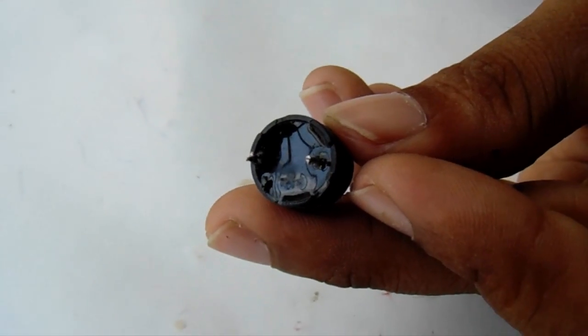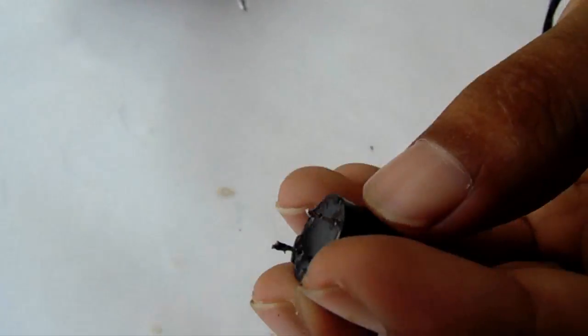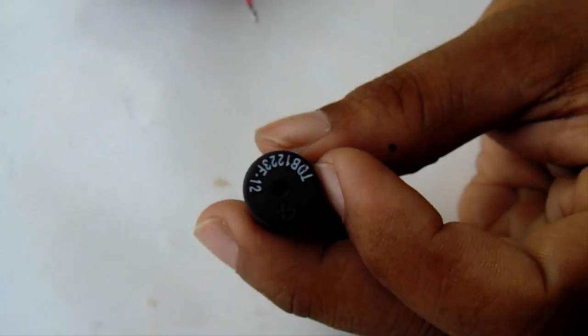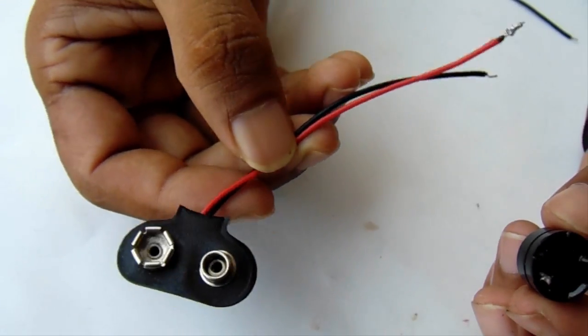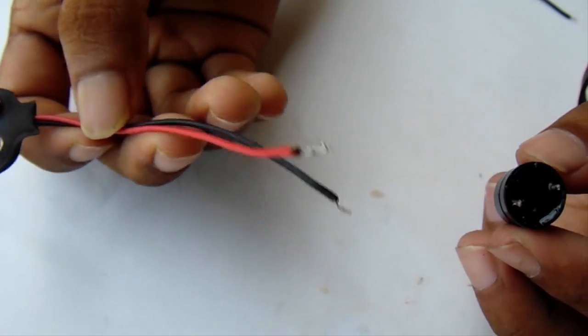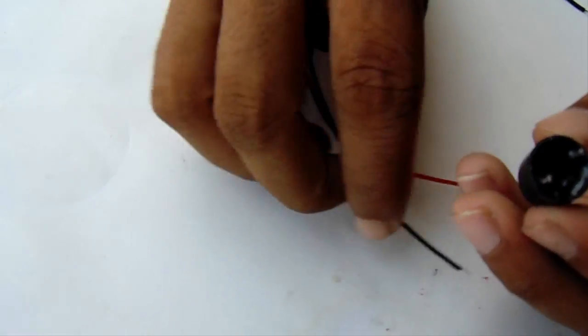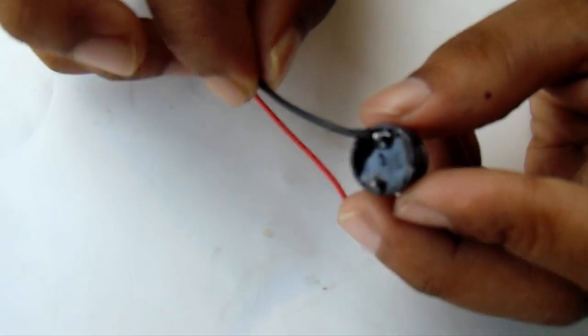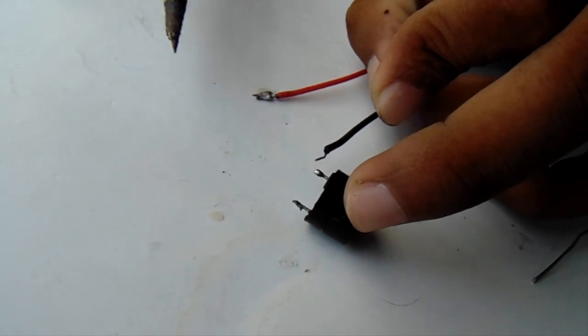Now take the buzzer. Here I have used a 6V buzzer. Take the connector of the 9V battery. You need to connect the connector black wire to the buzzer negative pin.